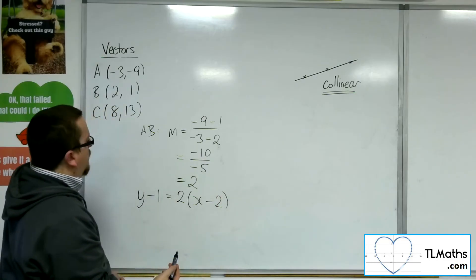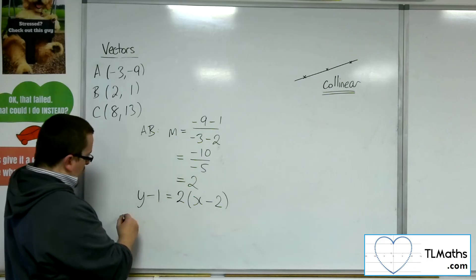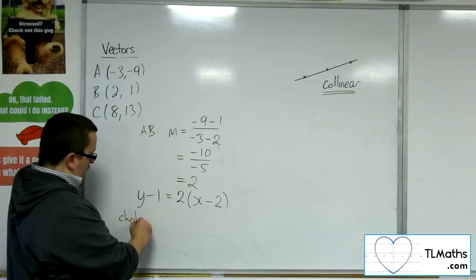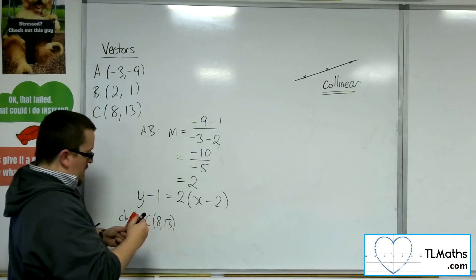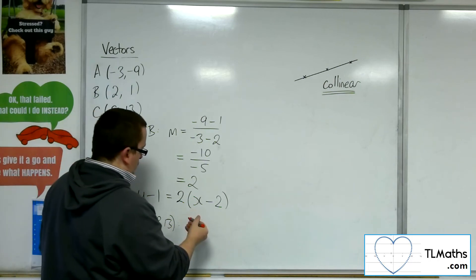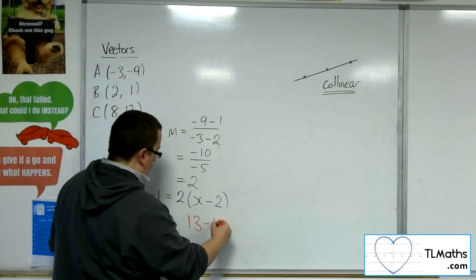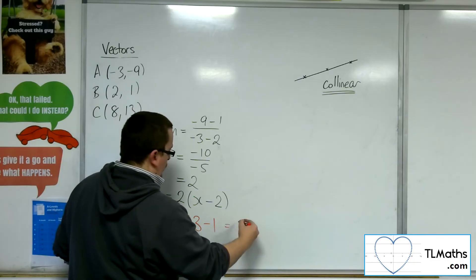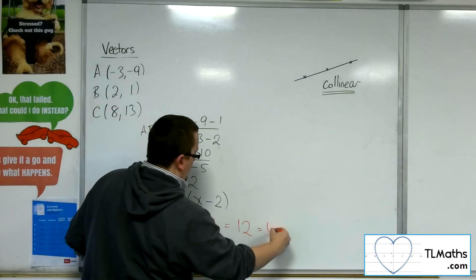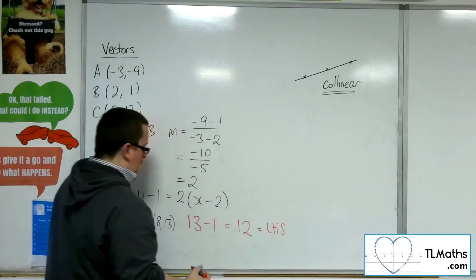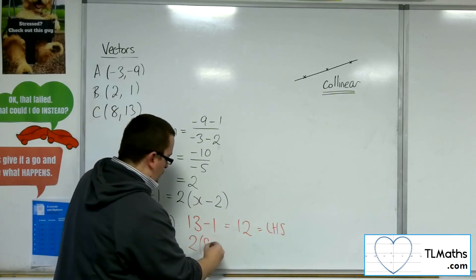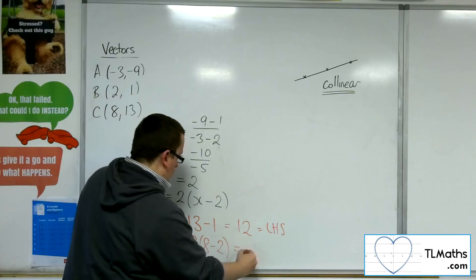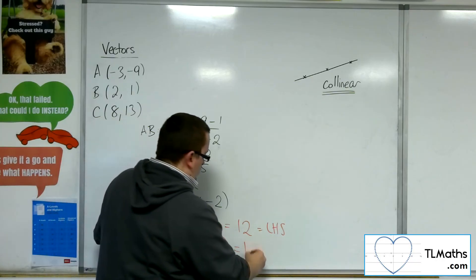I just need to check that C works in this equation. So check C. We would have 13 take away 1 equals 12. That's the left-hand side. And we've got 2 times (8 minus 2), so that's 6. Two times 6 is 12.